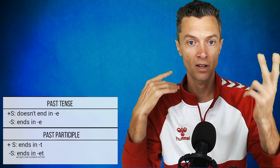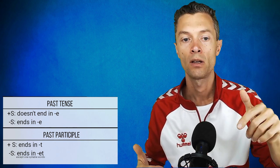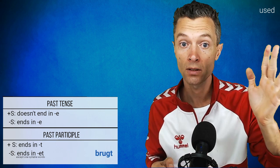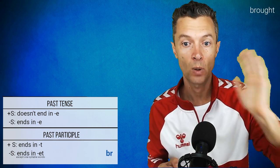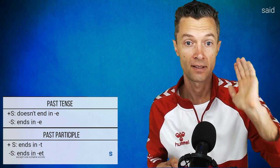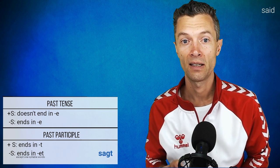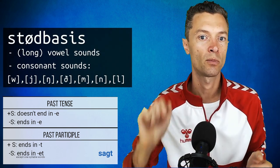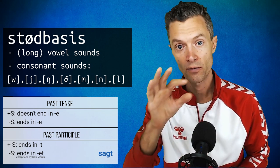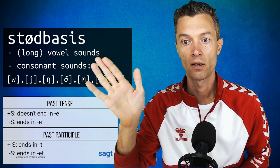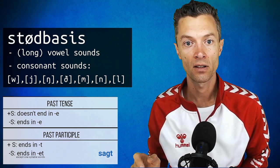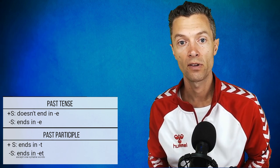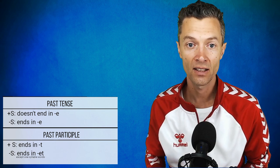There's also an exception in the other direction — words that end in just a -t but do not have stød: sat, brugt, vist, brakt, haft, sagt. They all have one thing in common: no stød bases. They have short vowels, which normally gives no stød, and the consonants are not part of the stød bases. This shows again the importance of the stød bases concept for understanding when stød is possible.